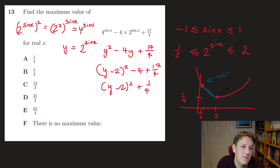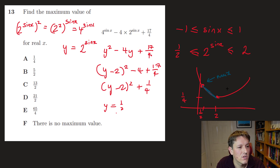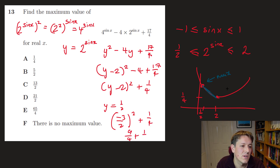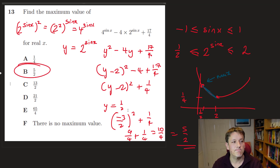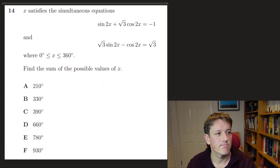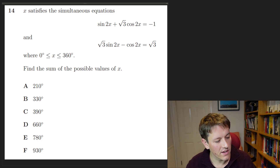Taking y = 1/2 in the completed square form: (1/2 − 2)² + 1/4 = (−3/2)² + 1/4 = 9/4 + 1/4 = 10/4 = 5/2. So the answer is B.